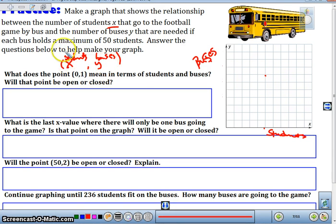And our y is going to be the number of buses we need. So if we are looking at this xy point of (0, 1), this means we have 0 students and 1 bus ordered. But if we think about this, the question is, does it make sense if we look at that? And so if no students show up, we would really want to think of having an open circle on our graph.